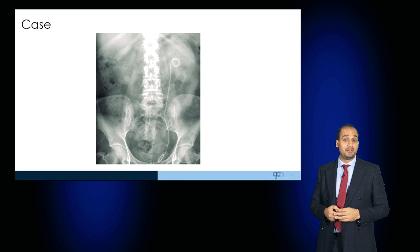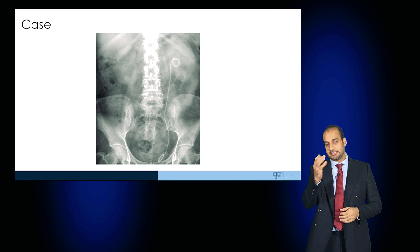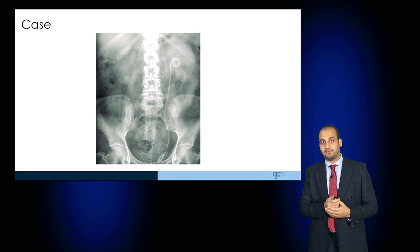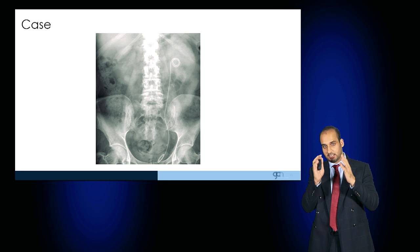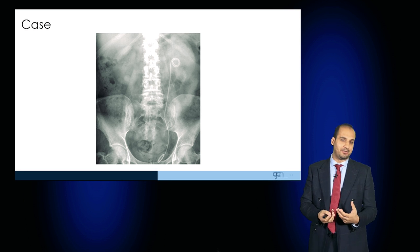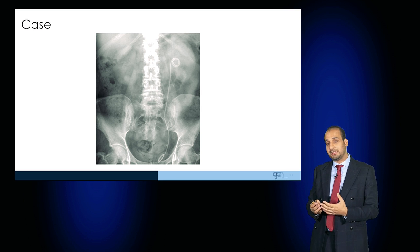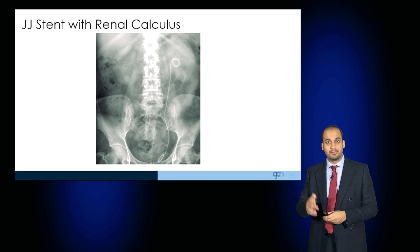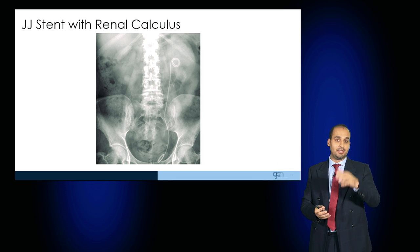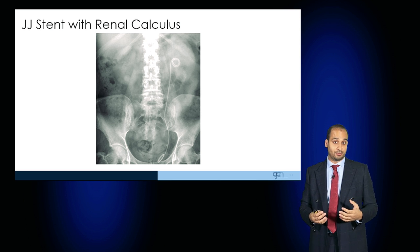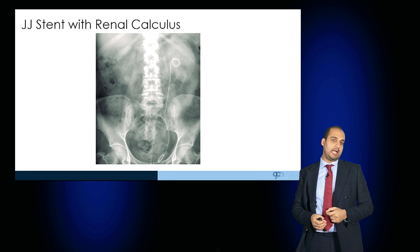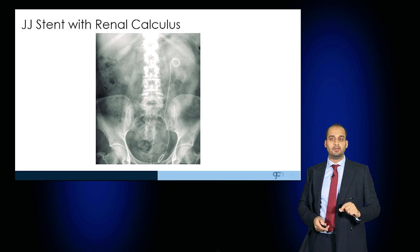Another foreign body in an abdominal film — this is known as a JJ stent, and this is in the left kidney extending all the way through to the bladder, passing through the ureter to overcome an obstruction. You can see that both kidneys look enlarged and you can just about make out their outlines — this is hydronephrosis. Perhaps this patient had a stone on the left-hand side which caused back pressure and acute kidney obstruction. A JJ stent was sited to allow fluid to flow freely out of the kidney through the ureters into the bladder, relieving that obstruction and allowing kidney function to improve. And if you look very closely at the distal end of this JJ stent, you can see a very small ureteric calculus.